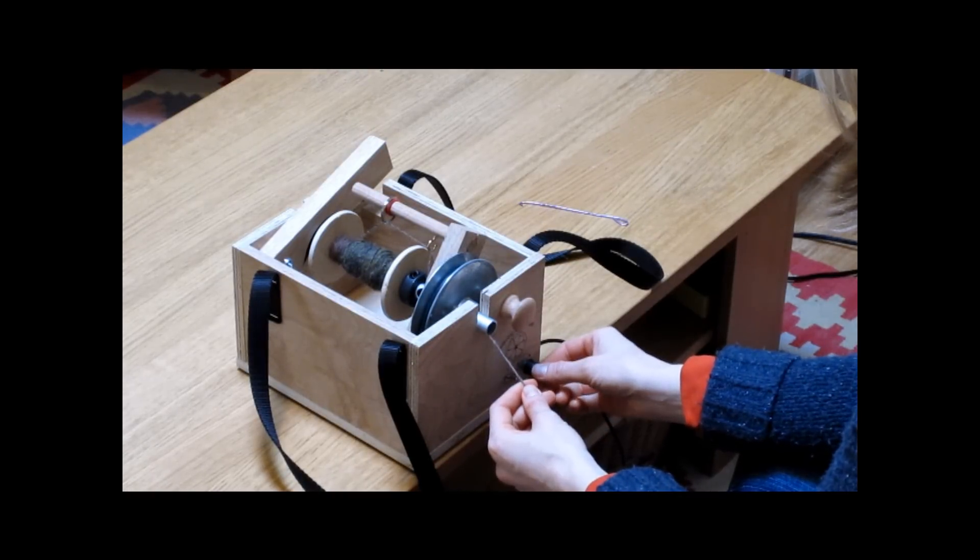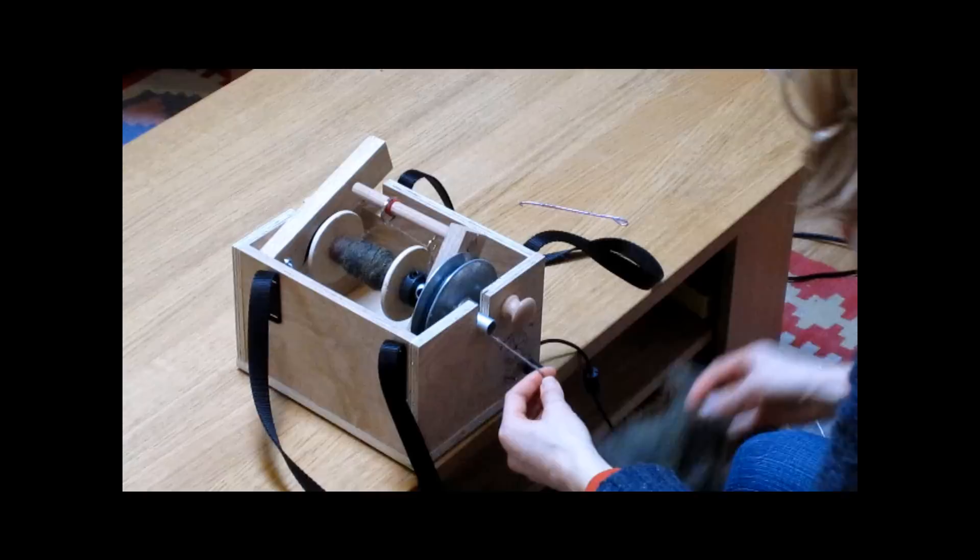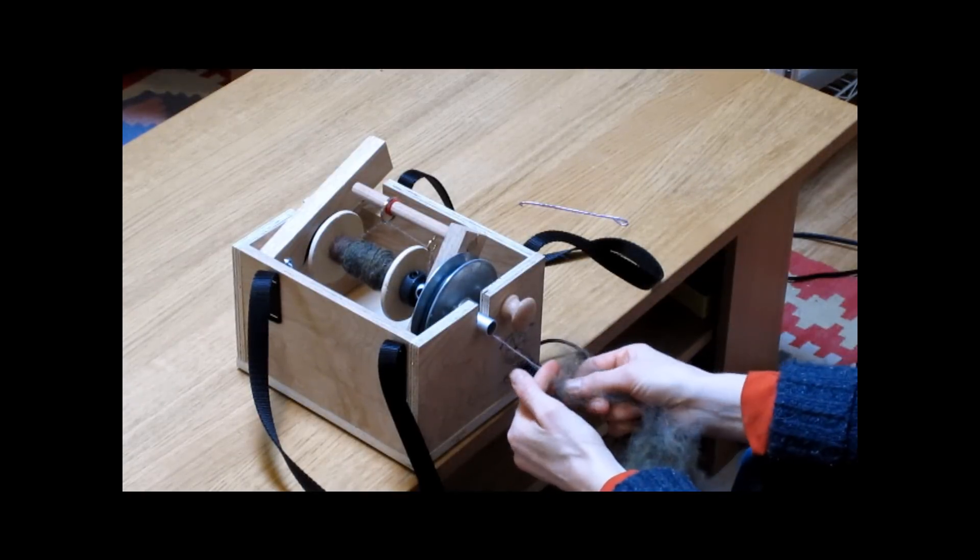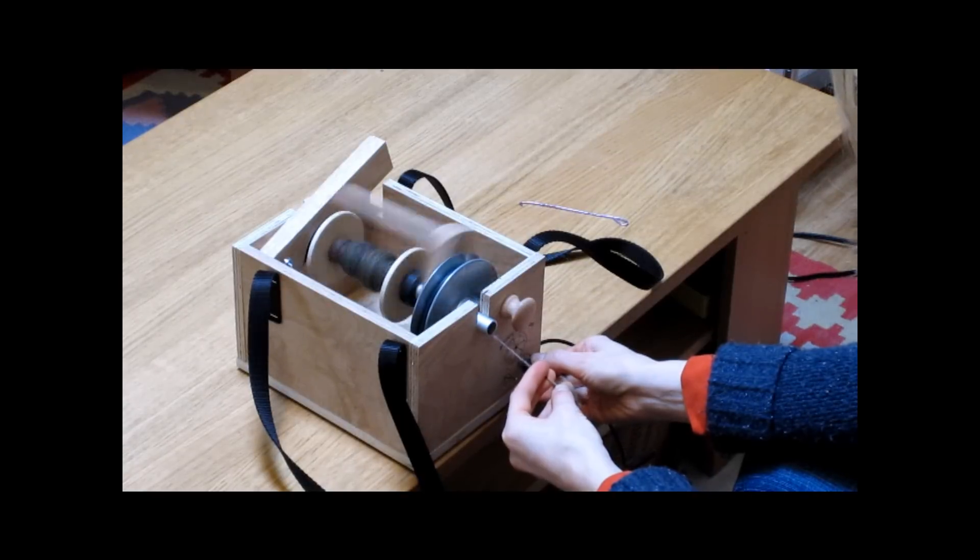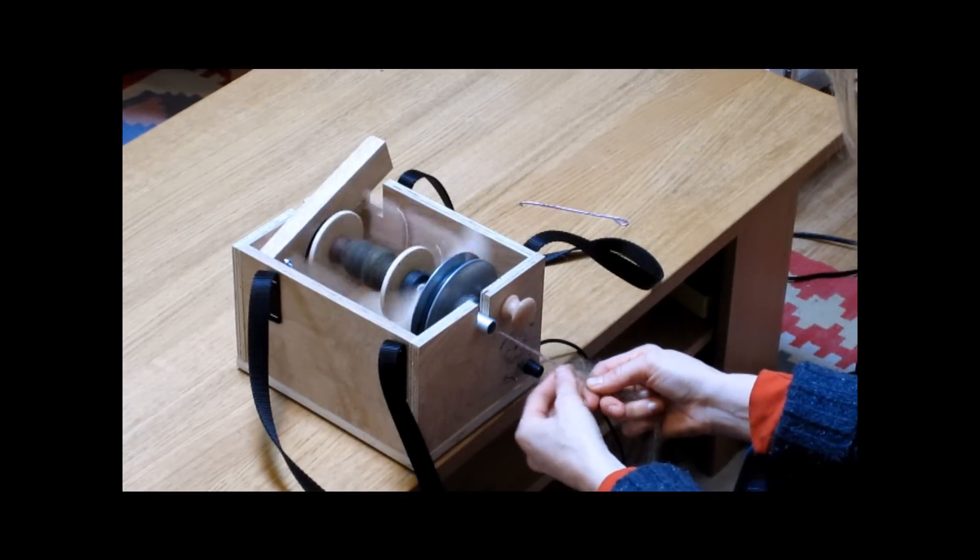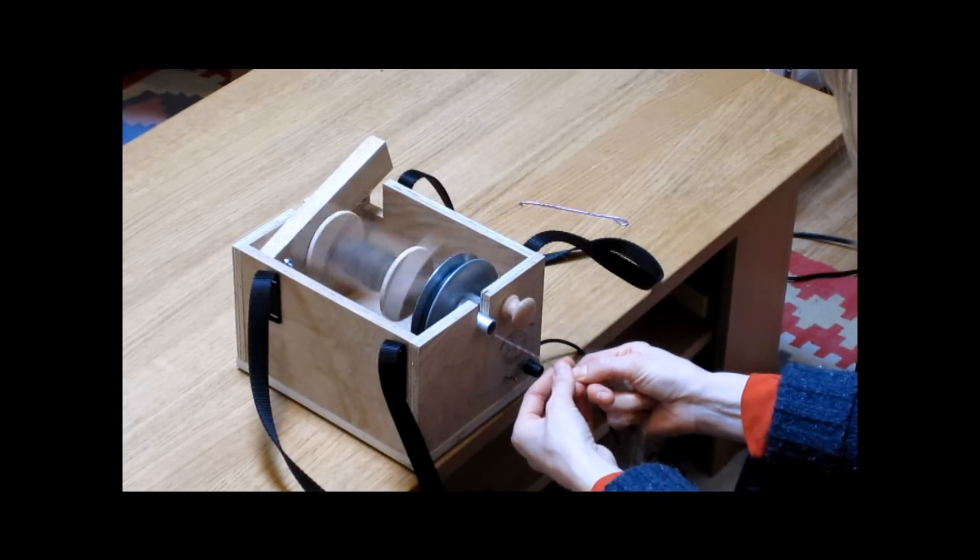That switch turns on the power. The dial controls the motor speed. If you turn the dial in the other direction the motor will spin in reverse which is useful for applying yarn.